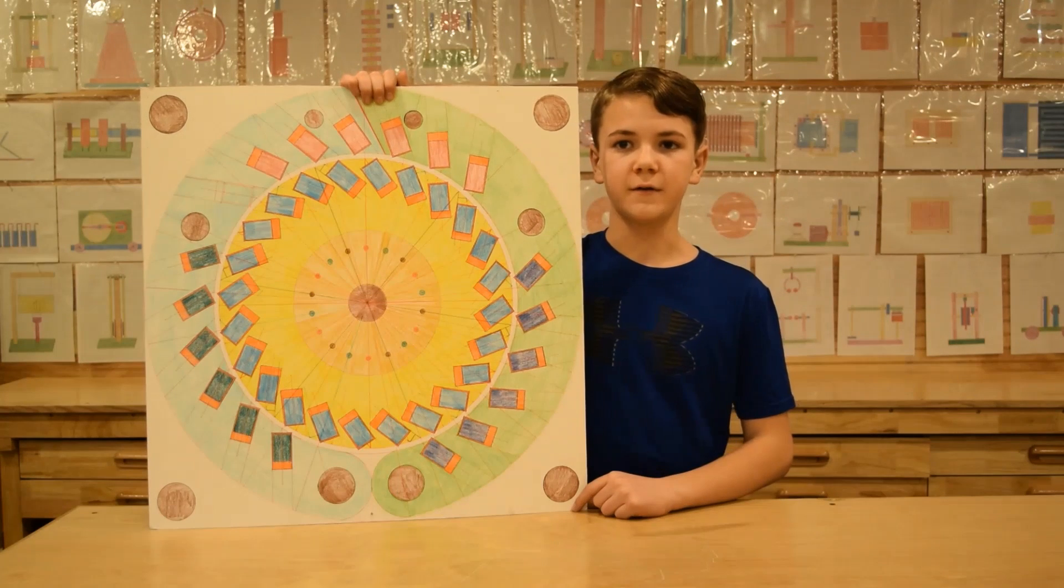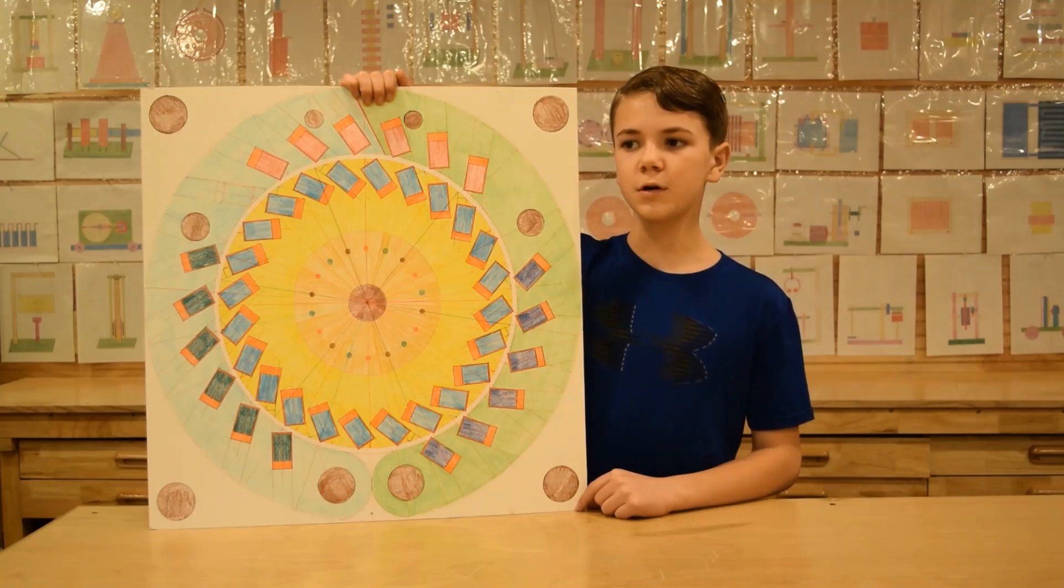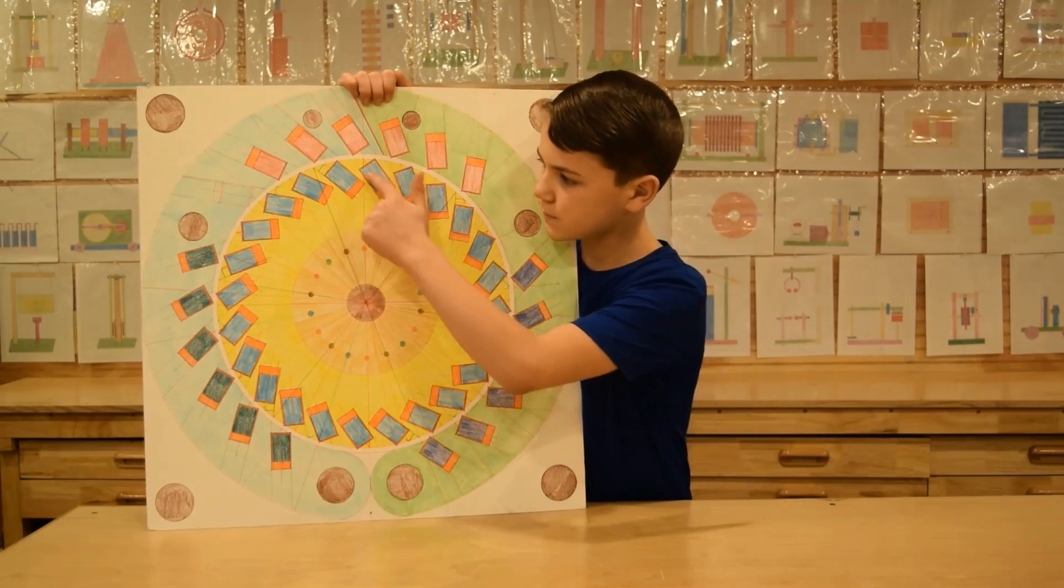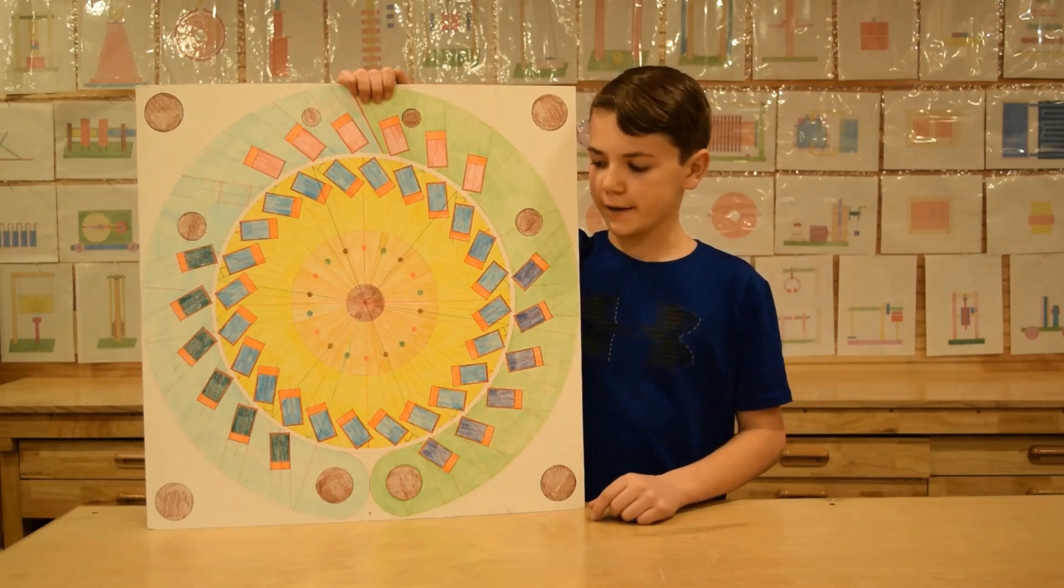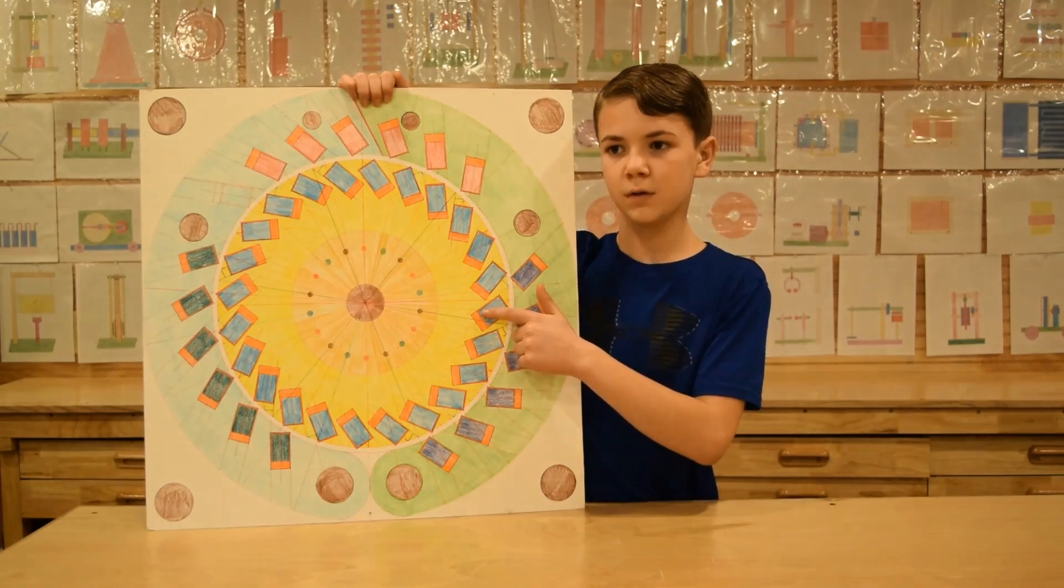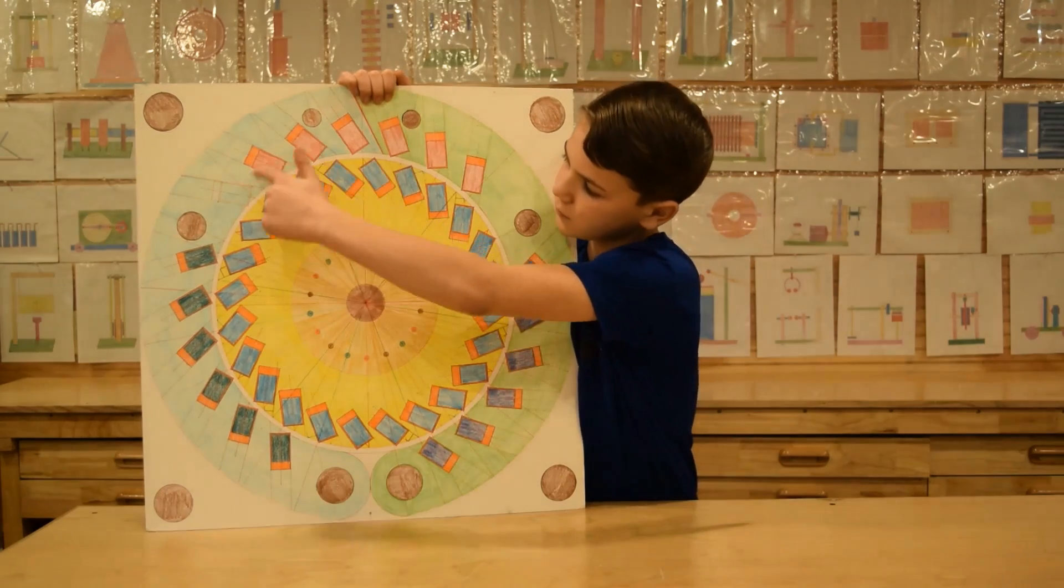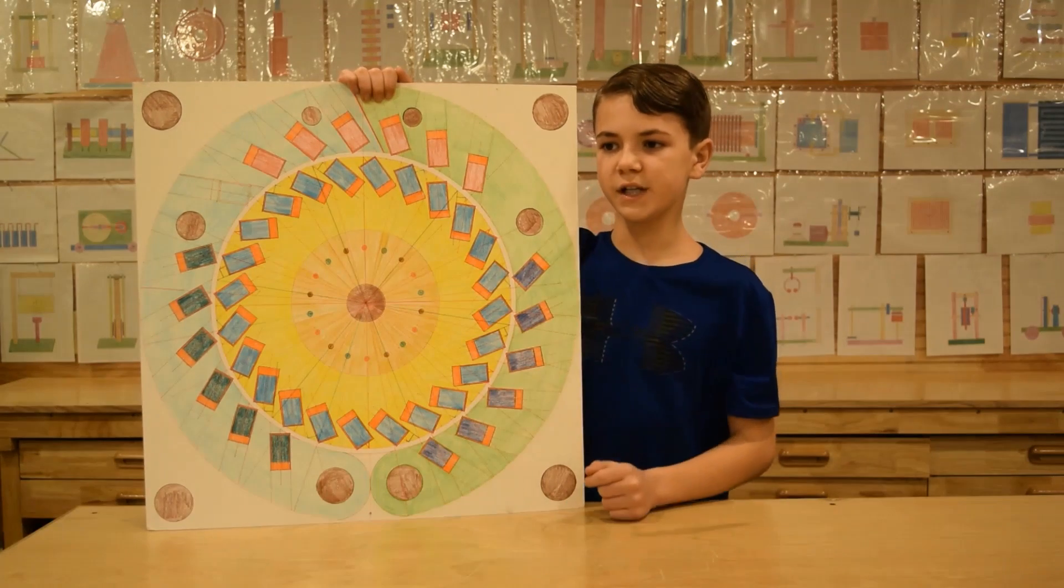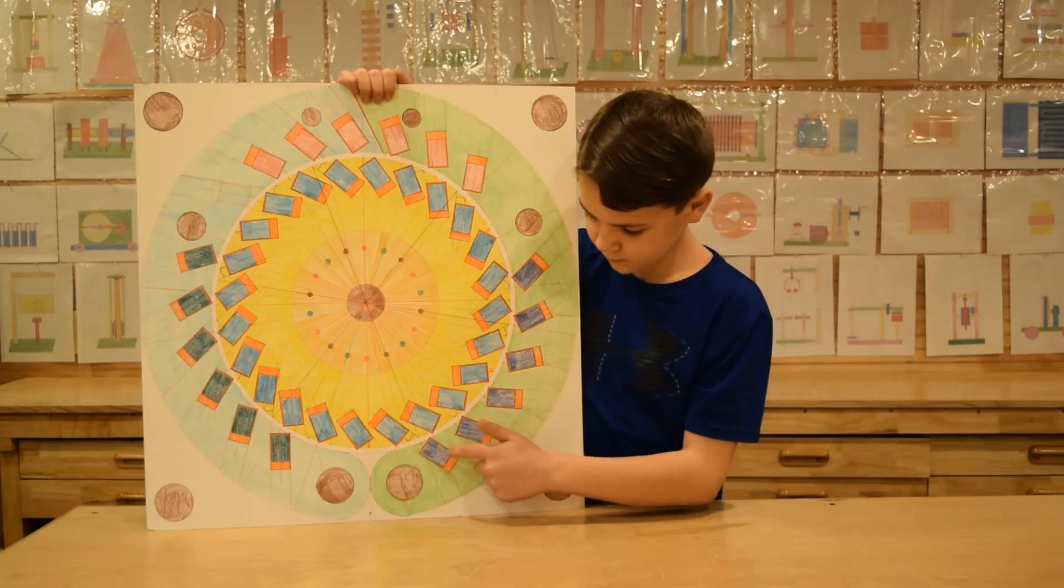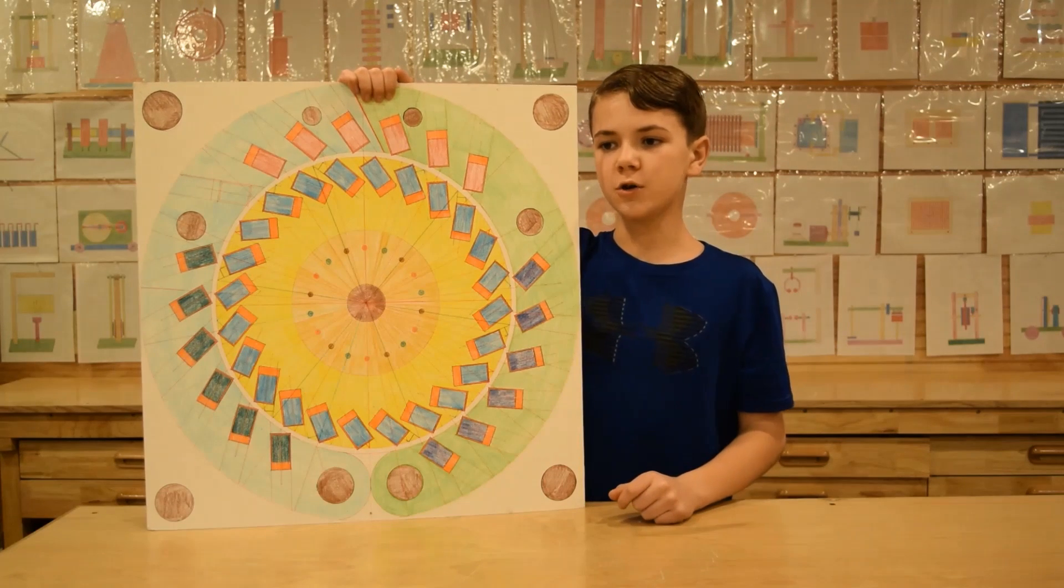We made a nice drawing for you guys so you can understand the principle of operation. The rotor has 24 magnets that are on an angle. There are three sets of stator magnets, six magnets each. They are also on an angle.